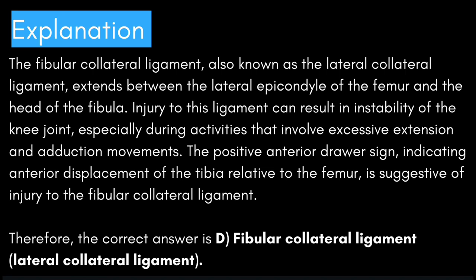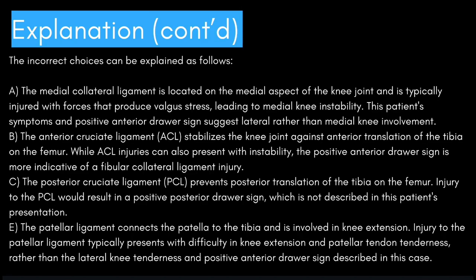Let's see why the other answer choices are incorrect. The medial collateral ligament is located on the medial aspect of the knee joint and is typically injured with forces that produce valgus stress, leading to medial knee instability. This patient's symptoms and positive anterior drawer sign suggest lateral rather than medial knee involvement. The anterior cruciate ligament stabilizes the knee joint against anterior translation of the tibia on the femur; while ACL injuries can also present with instability, the positive anterior drawer sign is considered more indicative of a fibular collateral ligament injury here.